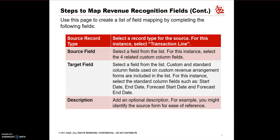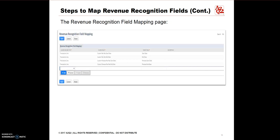Using this page, you can create a list of field mappings by completing the following fields. For Source Field, select a field from the list — in this instance, select the 4 related custom column fields. For Target Field, select a field from the list; custom and standard column fields used on custom revenue arrangement forms are included. We will select the standard column fields of Start Date, End Date, Forecast Start Date, and Forecast End Date for this instance. For Description, add an optional description — identifying the source form for ease of reference is one example. This is an example of the Revenue Recognition Field Mapping page.